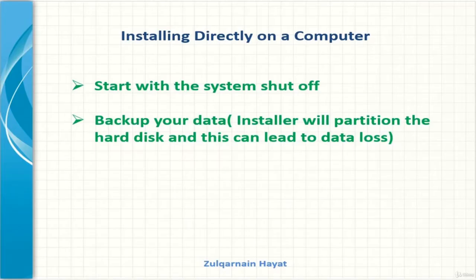Now that I have a Ubuntu installer I am ready to install it on a system. That system needs to be shut off, and it's a good idea to make a backup first, because during the installation process we will be changing the configuration of the hard drive. Especially if you are installing alongside another operating system, there is risk of data loss. In this case we will install Ubuntu as the only operating system, meaning any data currently on the hard drive will be erased.